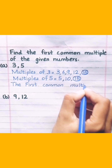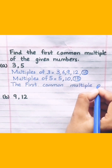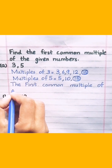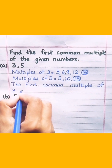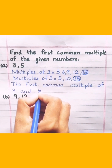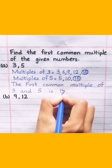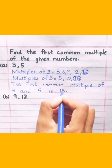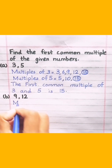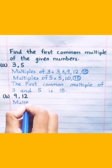The first common multiple of 3 and 5 is 15.